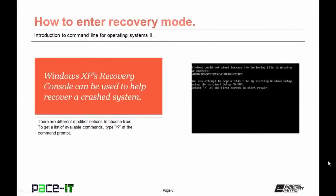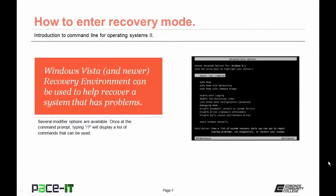The recovery console in Windows XP is used to help recover a crashed system. Once you have the command prompt, you can type forward slash question mark and enter to find the list of available commands. The recovery environment in Windows Vista and newer works the same way — used to help recover a system that has had a problem, with the same forward slash question mark to list available commands.